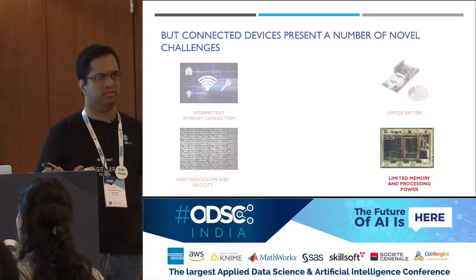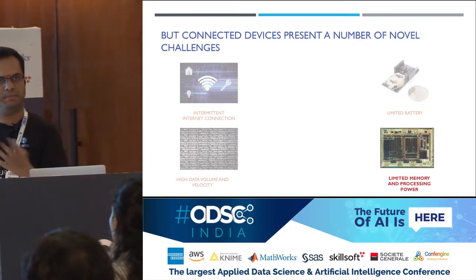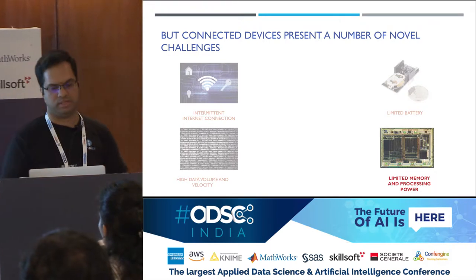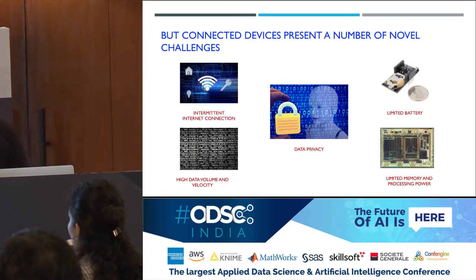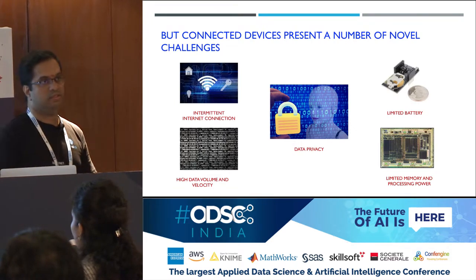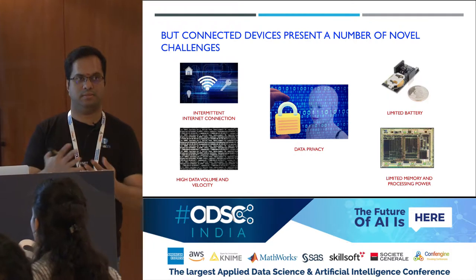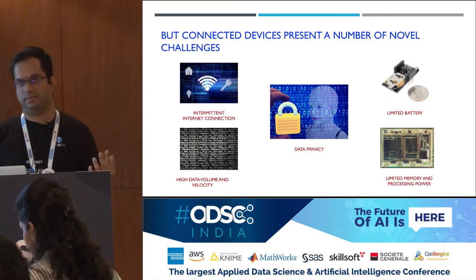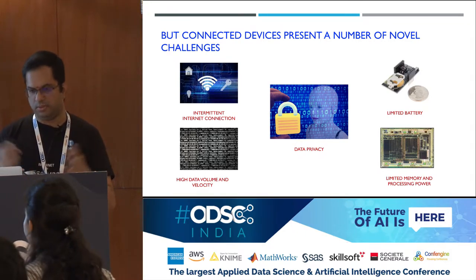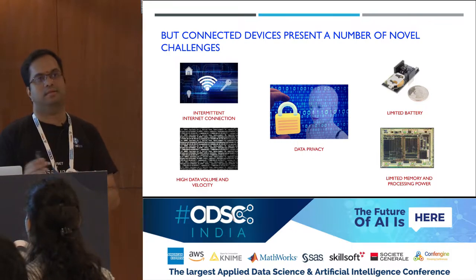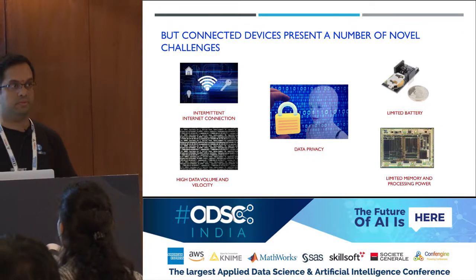IoT devices have very limited processing power. Some of these are microcontrollers — really, really small — meant to do one simple task, like getting a reading and performing some actions. They are not as powerful as even our mobile phones. Central to all of these challenges is data privacy, as many applications require companies to maintain the privacy of their customers and not give the data out.